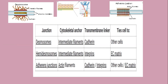First we will discuss anchoring junctions, which include desmosomes, hemidesmosomes, and adherence junctions. Looking at the diagram, you can see two plasma membranes connected in a zipper-like arrangement using cadherin. These plasma membranes are connected with intermediate filaments — for example, keratin filaments as shown in the diagram. Desmosomes are connecting links which connect intermediate filaments to the plasma membrane using the cell adhesion molecule cadherin.